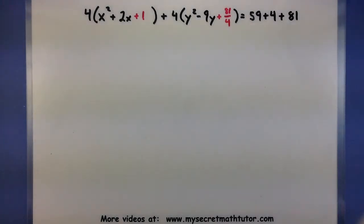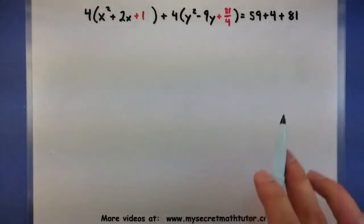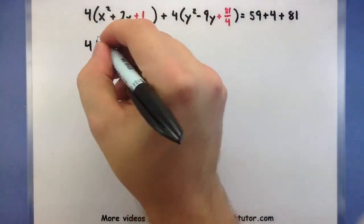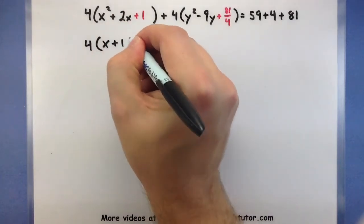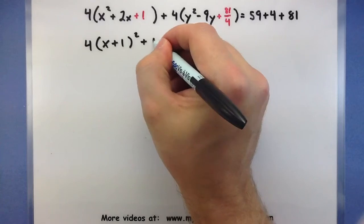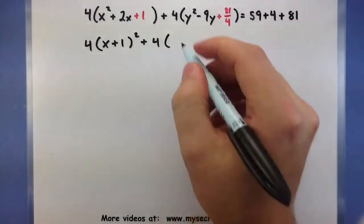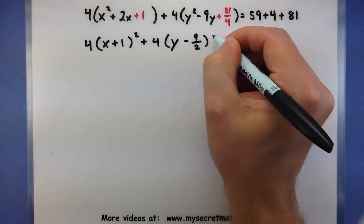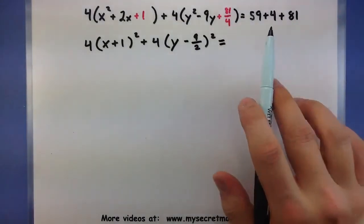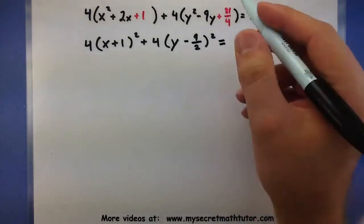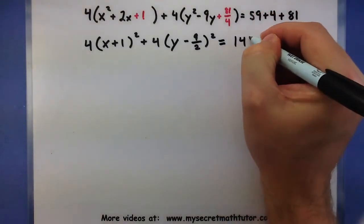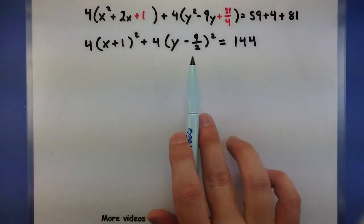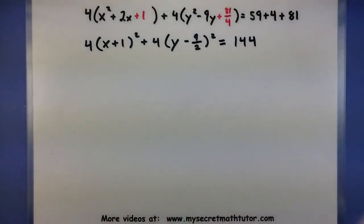Now with this equation, we can take it, factor the x's and the y's, and combine these terms. X plus 1 squared plus 4, and it looks like we have y minus 9 halves squared, equals 59 plus 4 plus 81, which is 144. With these 4's out front, we can divide everything by 4.